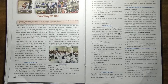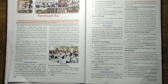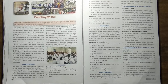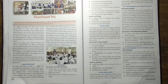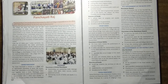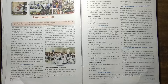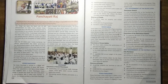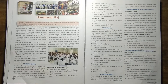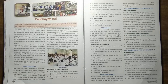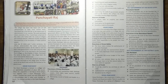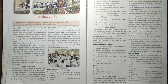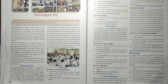India has 29 states and 7 union territories. For efficient administration, the Indian government has decentralized powers. At the national level, we have a union government. At the state level, the state government, and at the local level, the Panchayat Raj in villages or municipalities in towns.